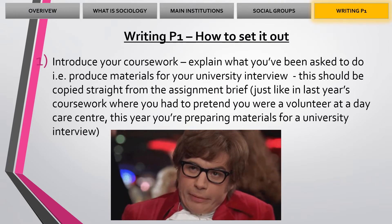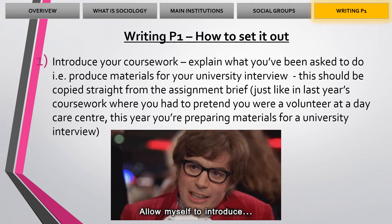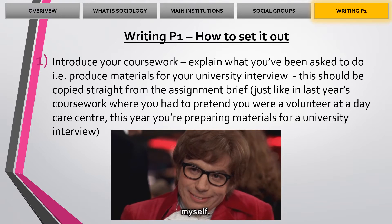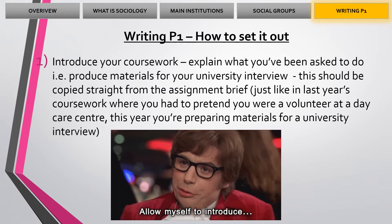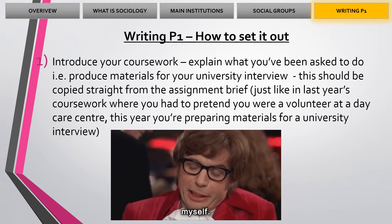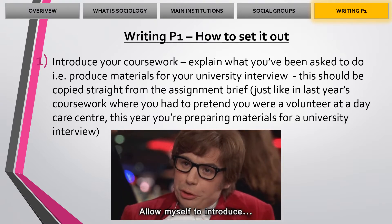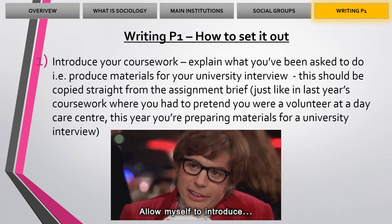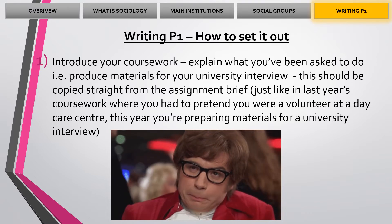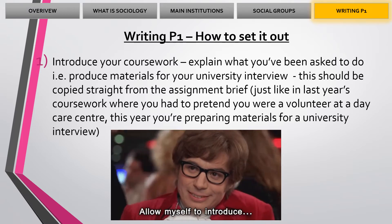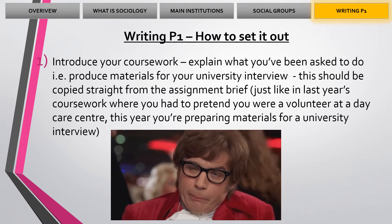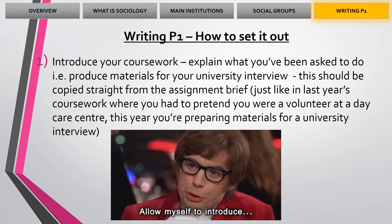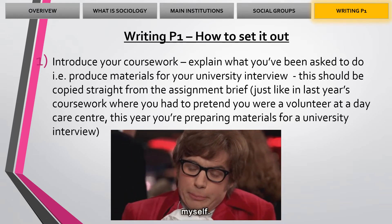Writing P1 — things we need to do. First, we need to think about how we set it out. Point one: introduce your coursework. You've been asked to produce the materials for your university interview, so you can copy this straight from the assignment brief, just like we did last year. You are pretending that you are writing this to go to university — you are doing the research and will write a report for your university interview. Introduce the coursework, and as part of this you can also talk about your setting, introduce your local area and your chosen setting.